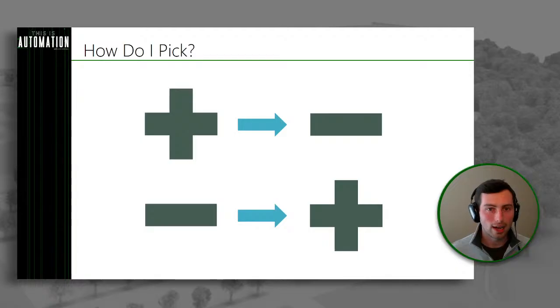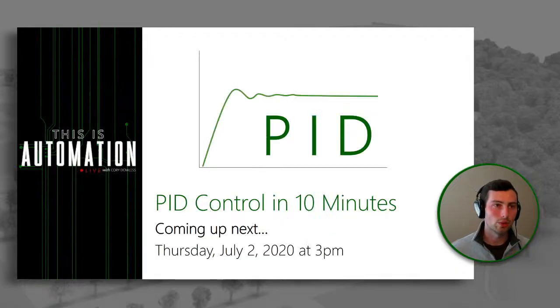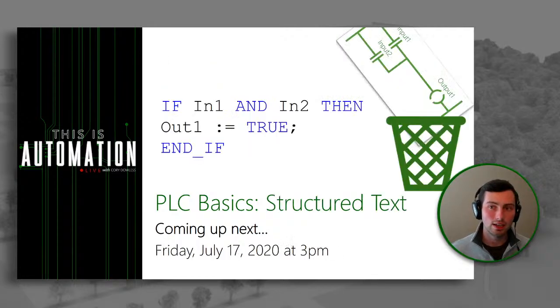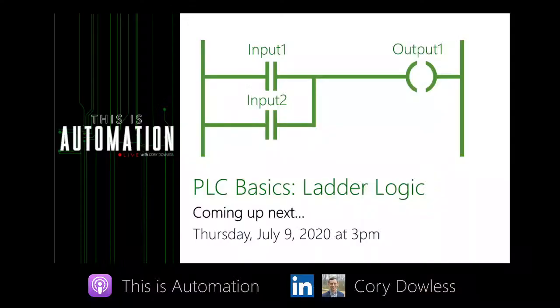So let's quickly run back through what we have coming up next. As a reminder, PID control in 10 minutes is next week. The following week we're going to be doing our intro to ladder logic, and then the week after that we'll be doing our intro to structured text. Thank you for joining this live episode. If you have any other questions about sinking and sourcing, let me know in the comments — I'd be happy to do a deeper dive into the sensing technology inside IO modules if that would be helpful. As always, appreciate the likes, shares, and comments, and don't forget to subscribe to the channel. Thank you everybody for watching this episode of This is Automation Live, and we will see you next time.